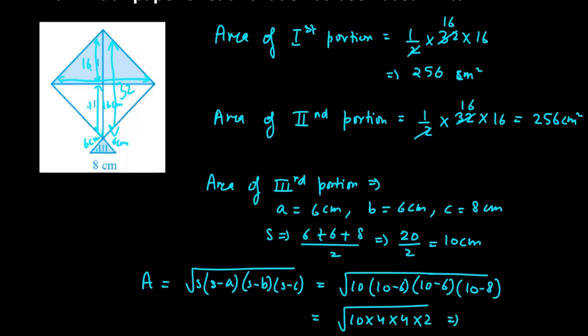10 can be split as 2 into 5. You can write it as 2 into 5 into 4 squared into 2. Taking out the squares: 4 into 2 is 8, and 5 will remain under the root, giving you 8 root 5 cm².